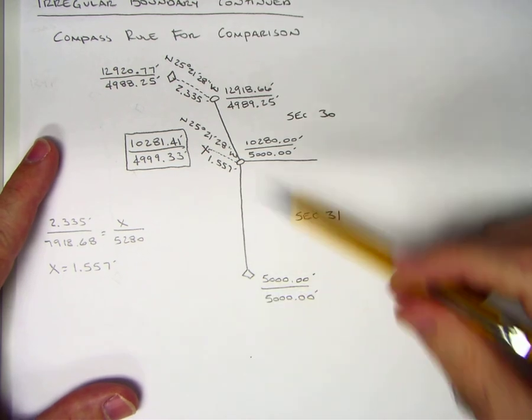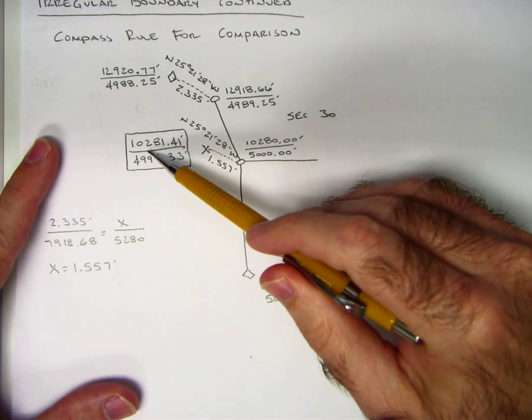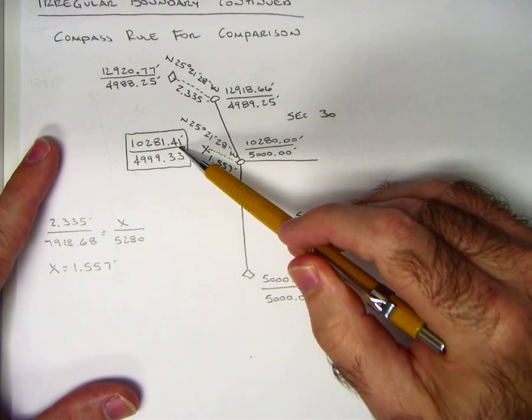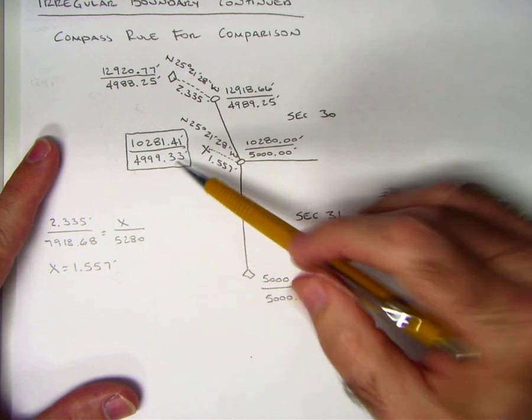When you do this, and I'm not going to work out the example because I've already worked out an example on this, the coordinates of the lost point would be ten thousand two hundred eighty one point four one feet and four thousand nine hundred ninety nine point three three feet.